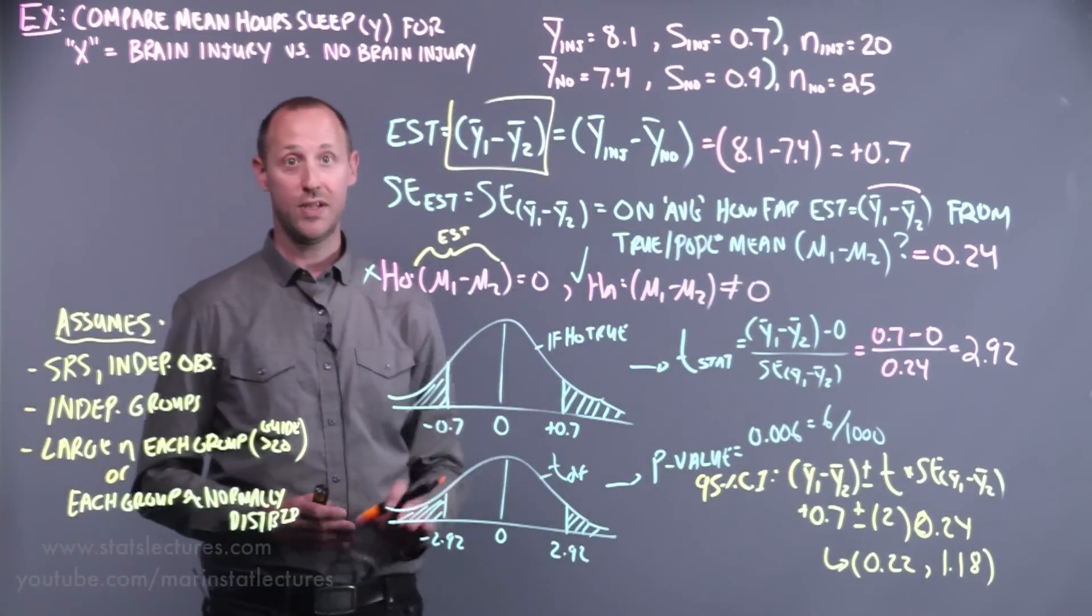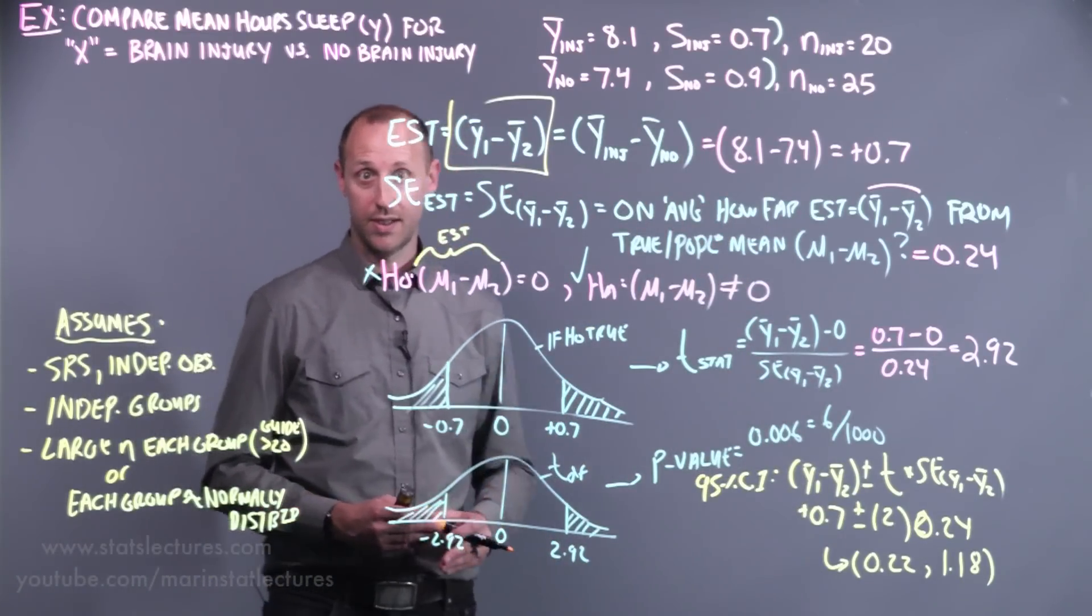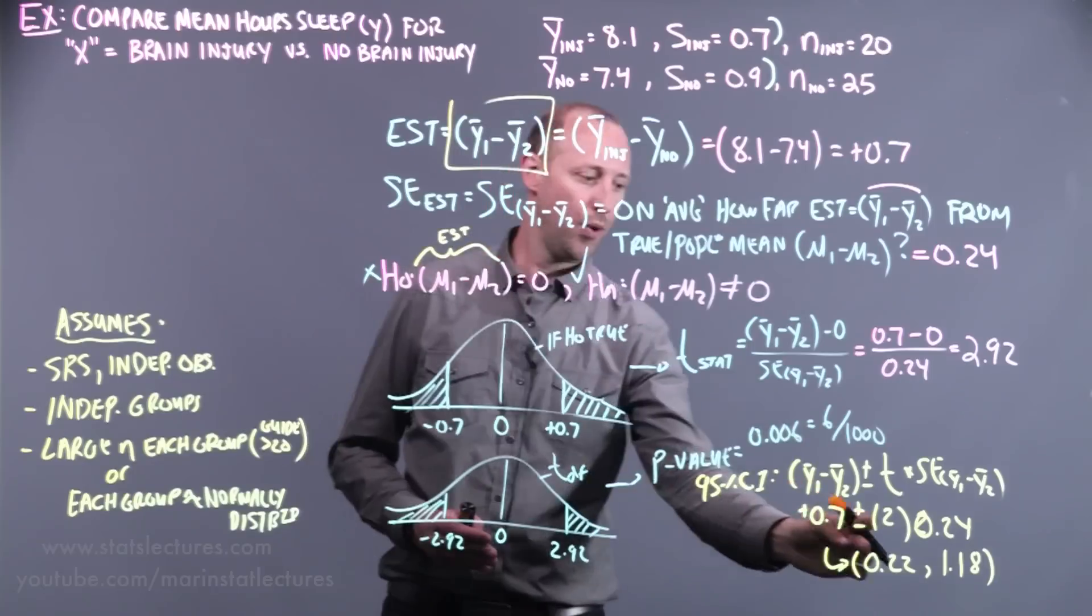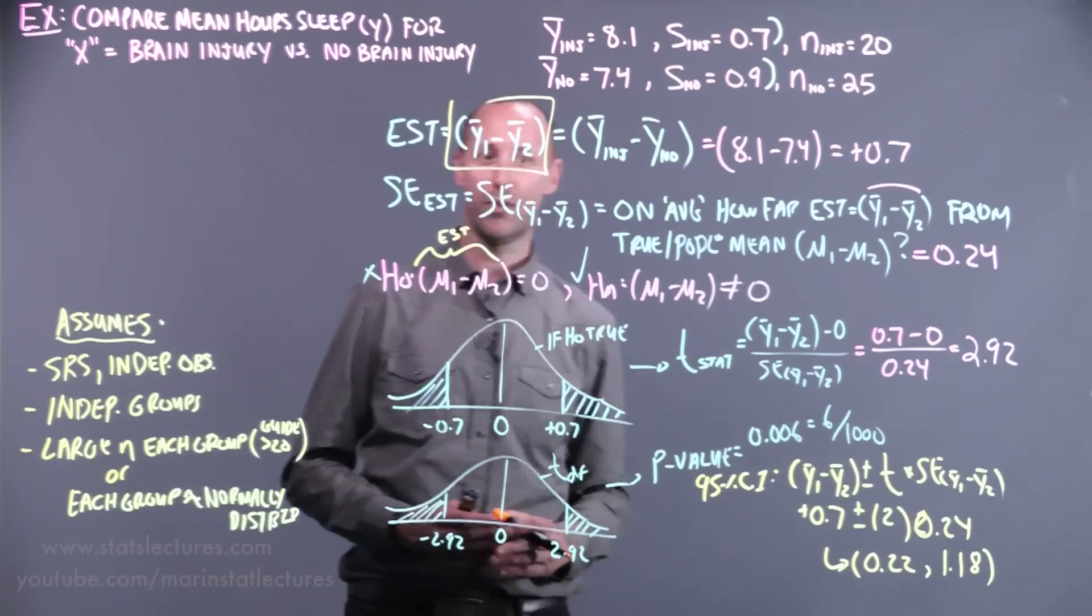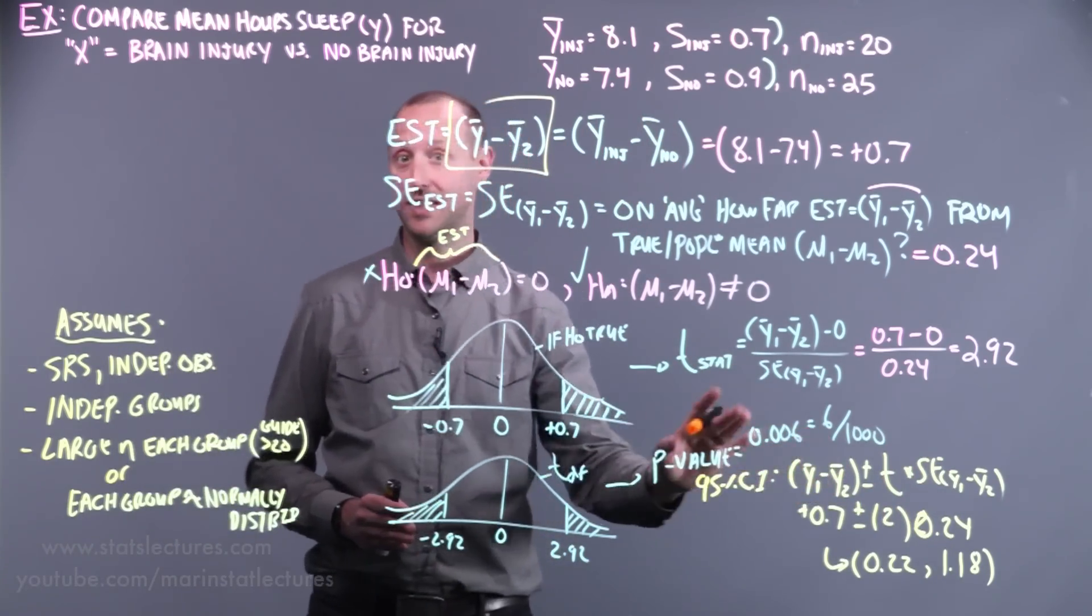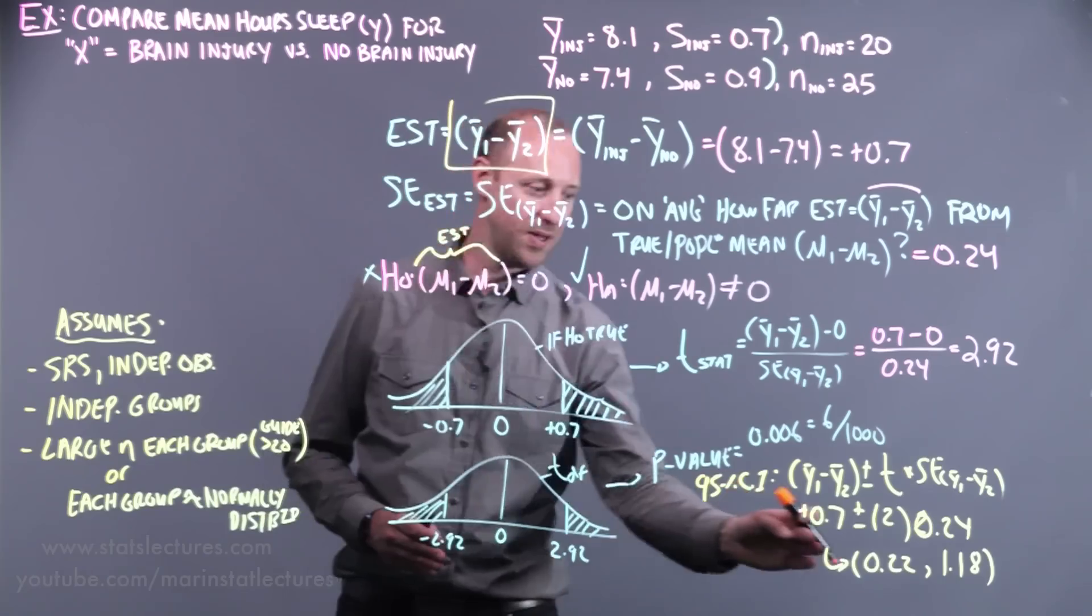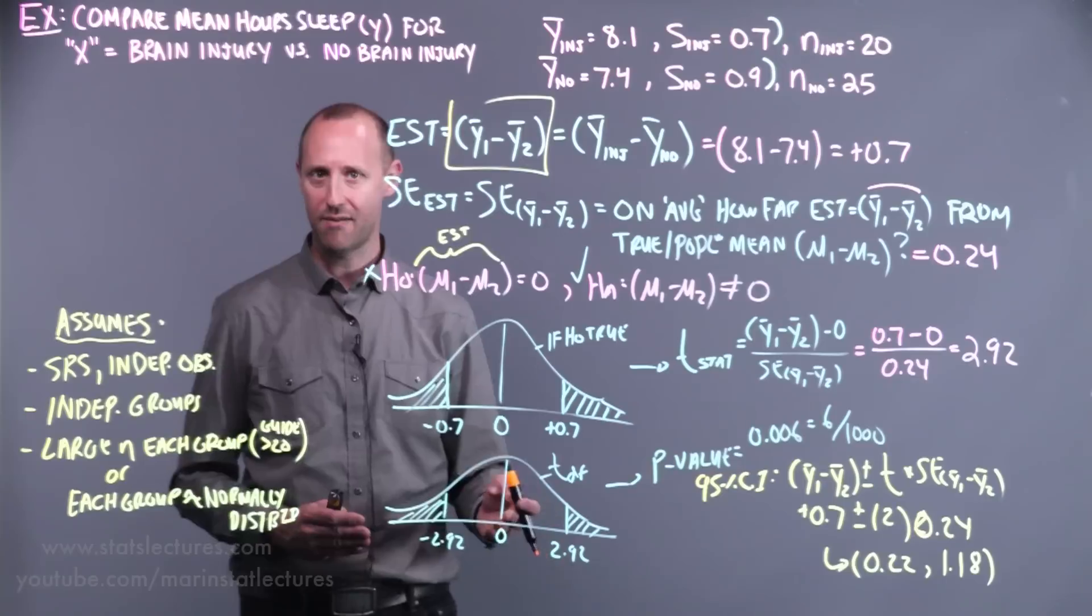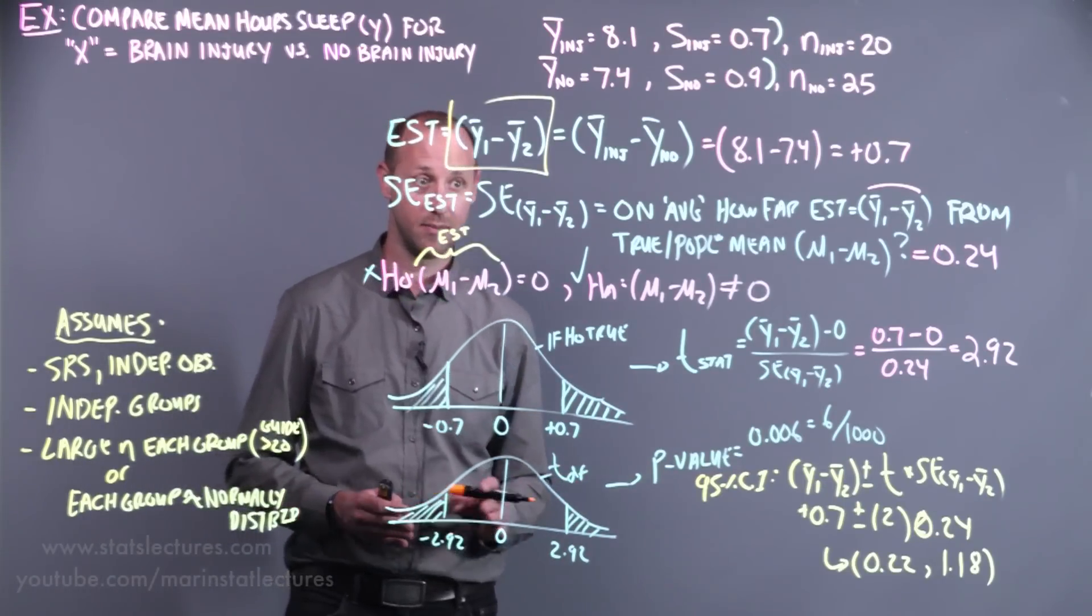To interpret this, we're 95% confident that on average, those with a brain injury within the last year are sleeping somewhere between 0.22 hours more to 1.18 hours more than someone without a brain injury. You can decide, apart from being statistically significant, is this scientifically meaningful? Is sleeping 0.2 hours more, looking at the lower end, is that a meaningful difference or not? This is where context becomes important.